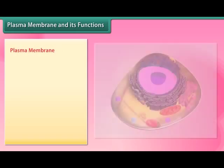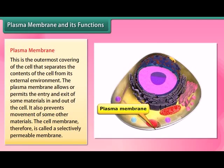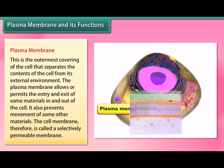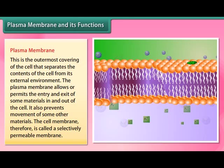The plasma membrane is the outermost covering of the cell that separates the contents of the cell from its external environment. It allows or permits the entry or exit of some materials in and out of the cell, while also preventing the movement of some other materials. The cell membrane is therefore called a selectively permeable membrane.